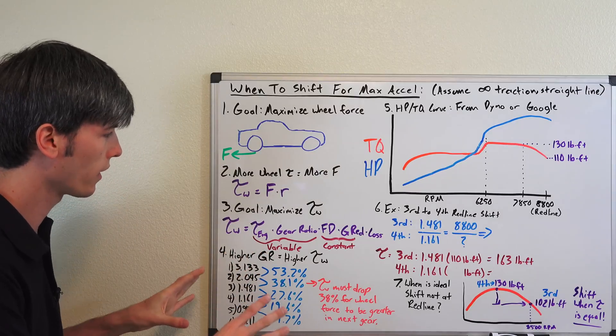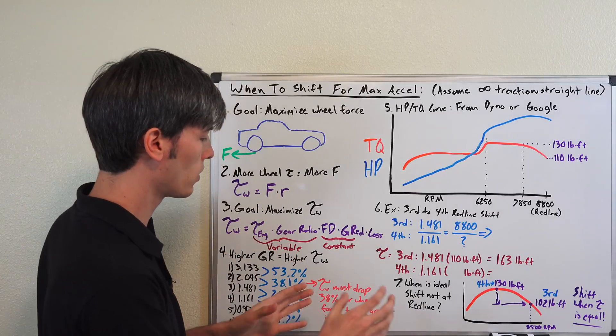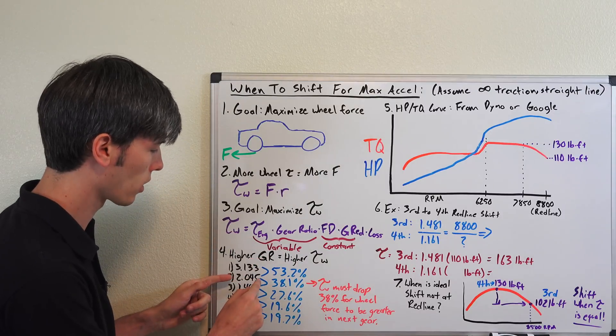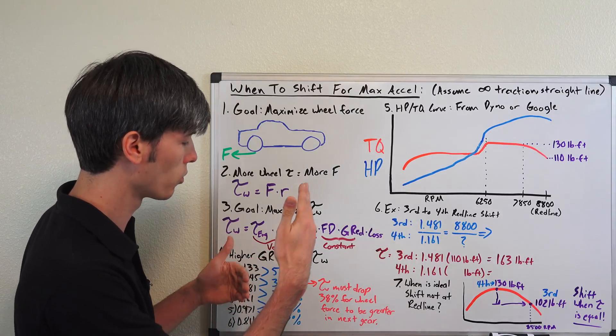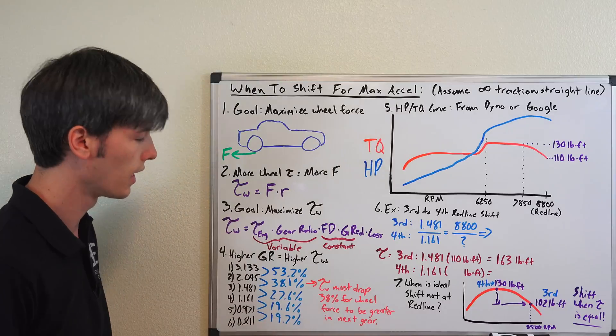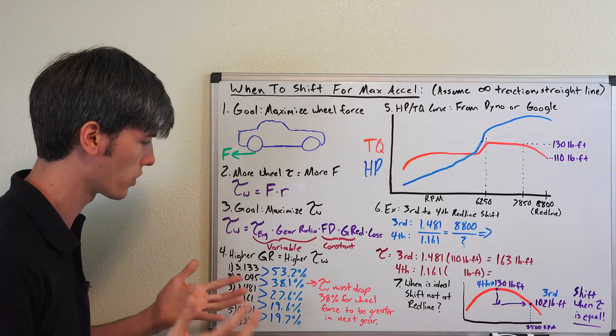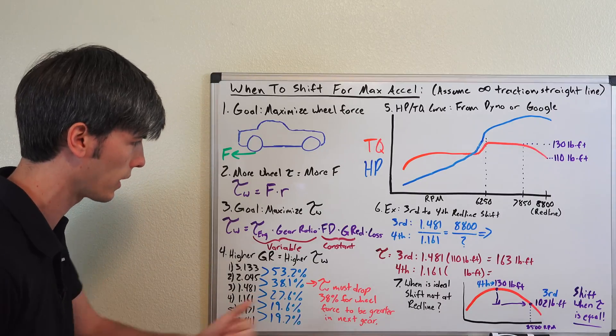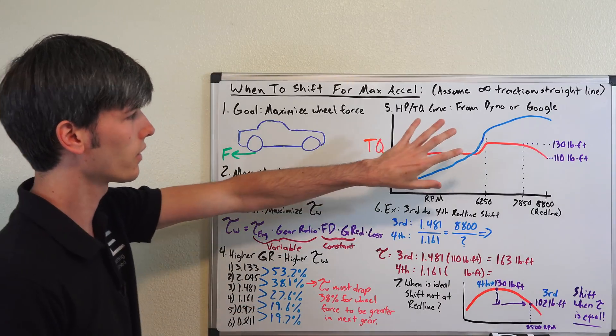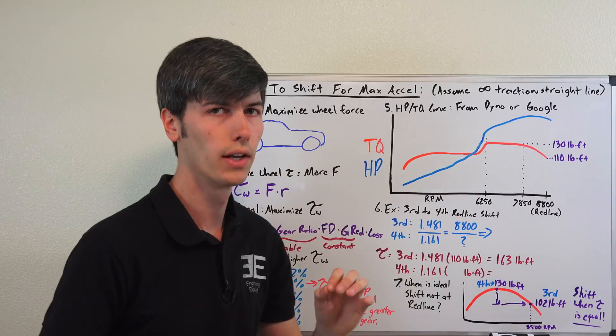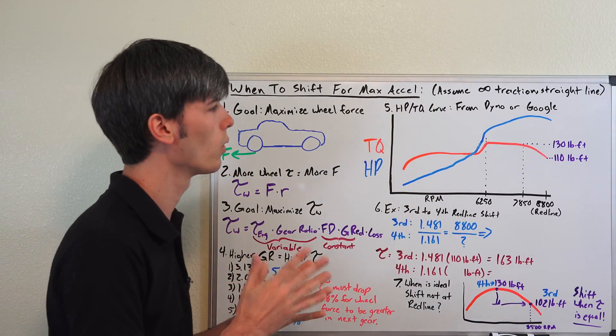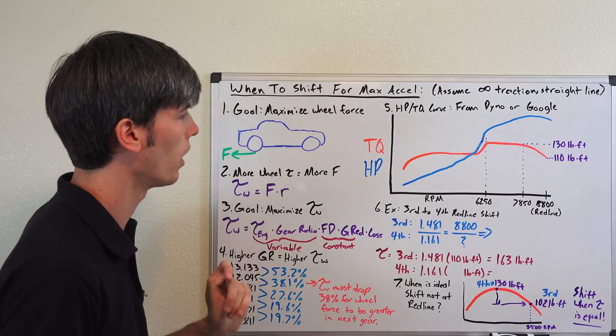So in order for you to need to shift, the torque from the engine has to drop, let's say we're going from first to second gear, the torque from the engine would have to drop 53% in order for that to be worthwhile. Which is going to be very rare, as you might imagine. So you're pretty much going to run that out to redline. So, let's look now at a dyno curve, so we can now get the exact numbers and know when should we shift gears, depending on which gear shift we're on.